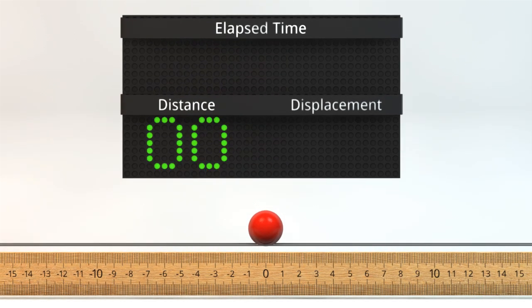Distance tells us how much ground the ball has covered since it started moving. Notice how any movement of the ball adds to the distance.